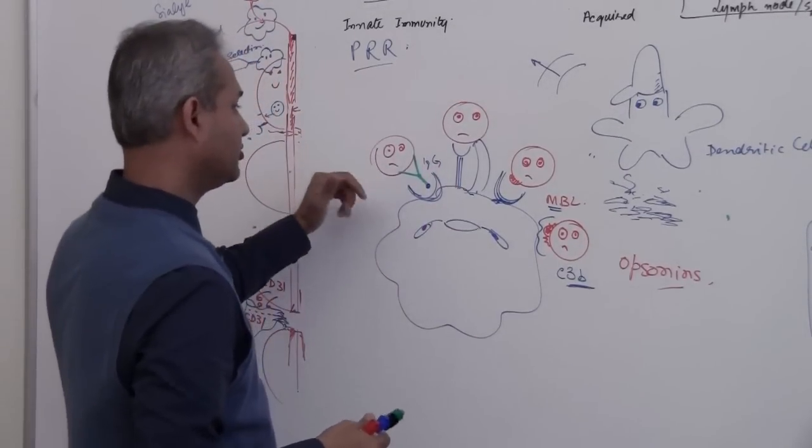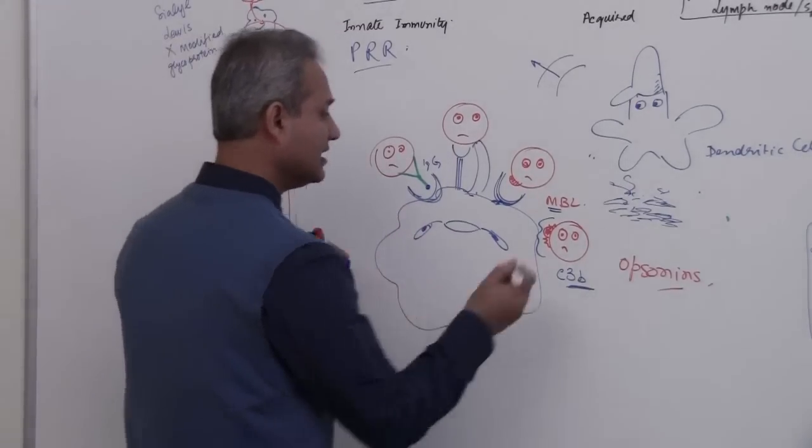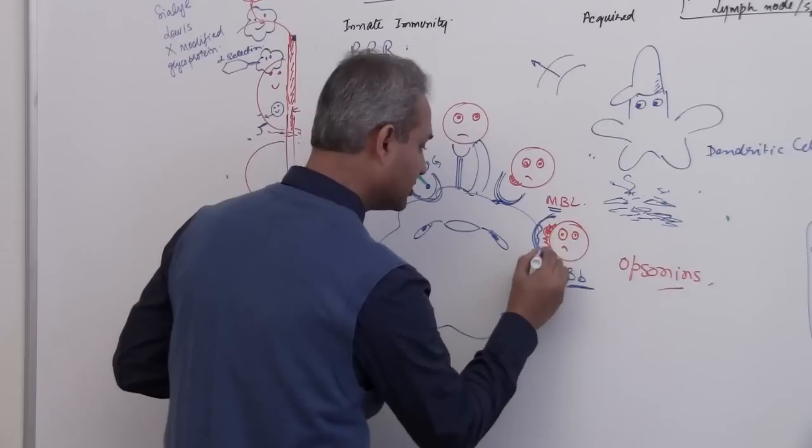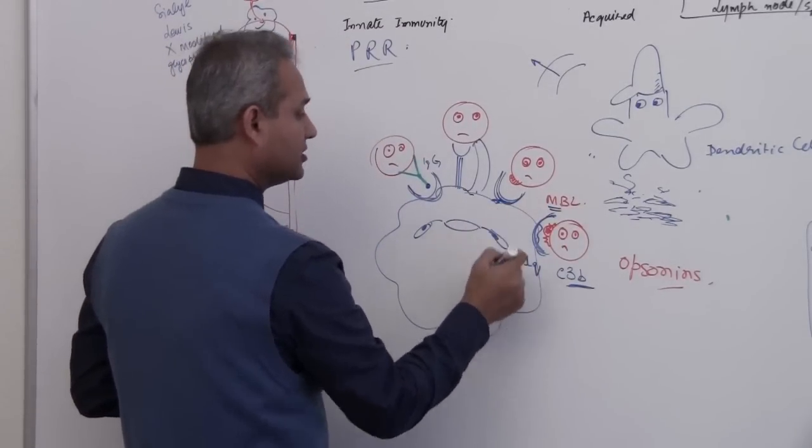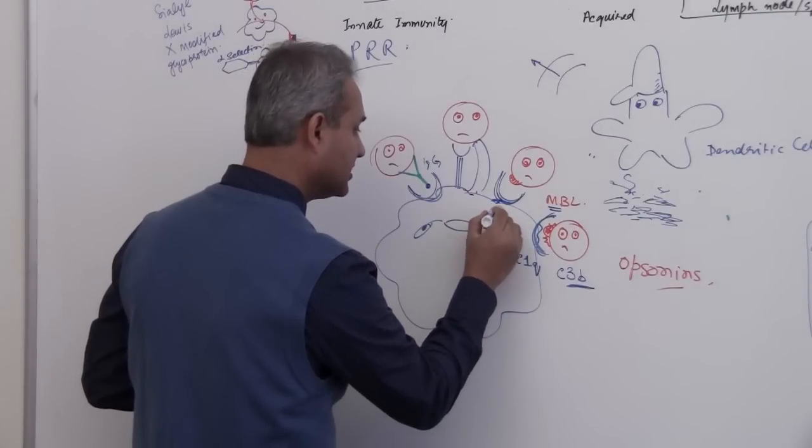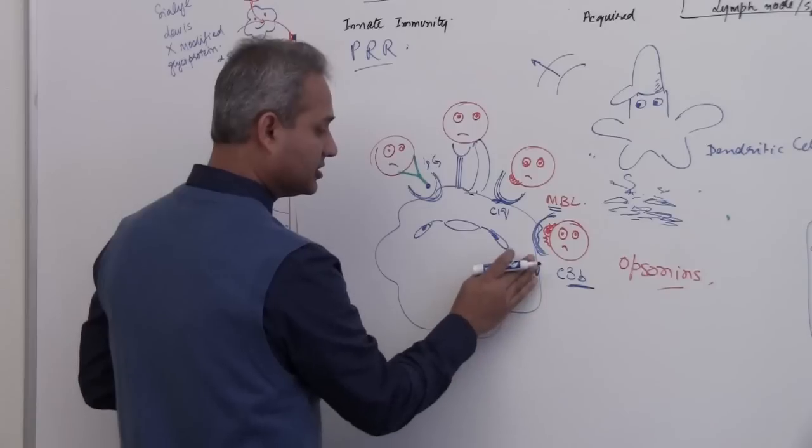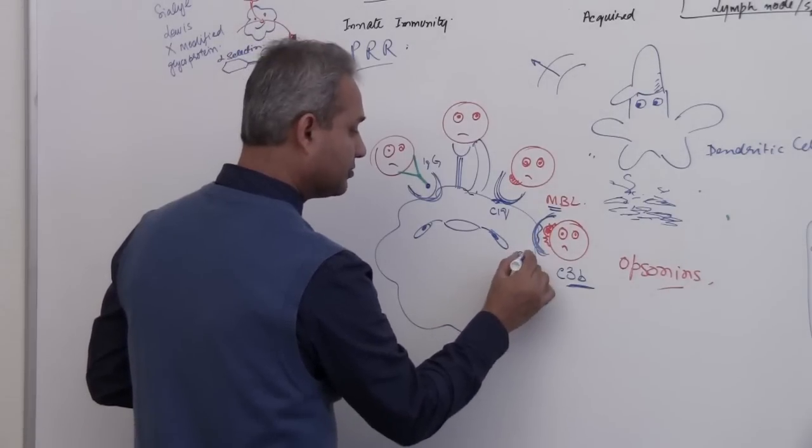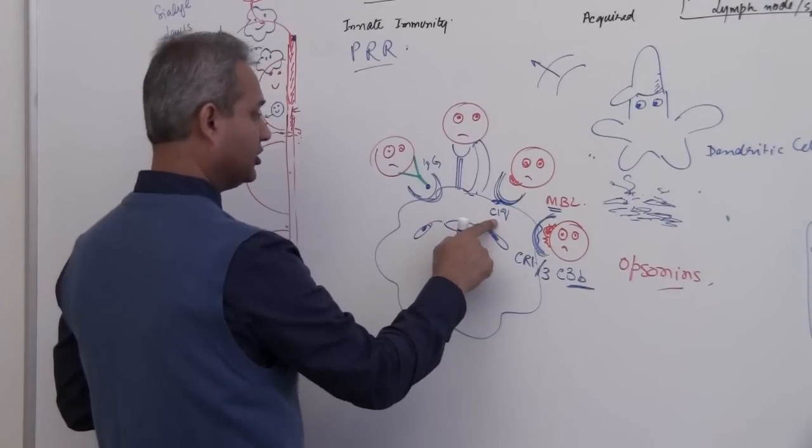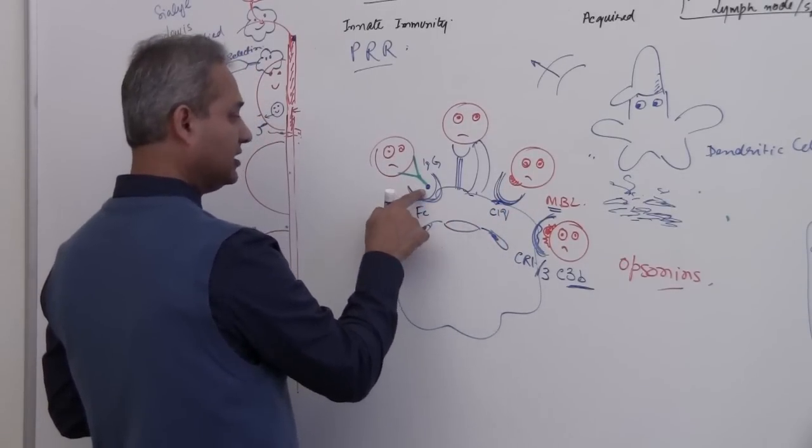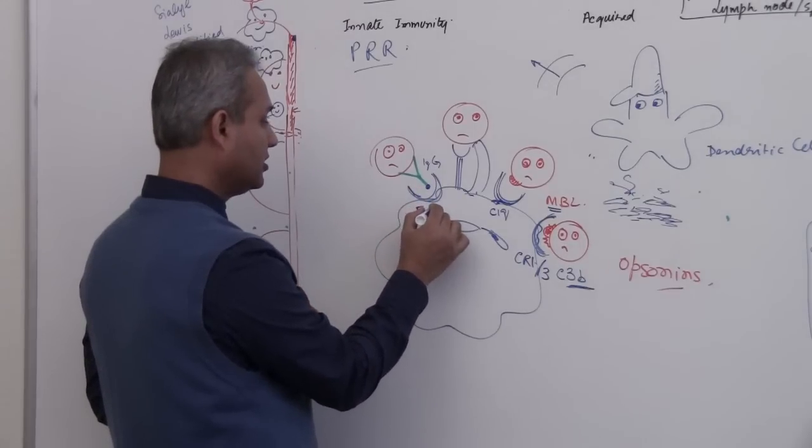So I just had written those receptors here. C3B this receptor is going to be called C1Q. MBL receptor is, sorry, so this is C1Q which binds MBL. The complement binding receptors are complement receptor 1 and 3, C3B. Once again, MBL receptor is C1Q and IgG receptor is Fc, so that is for the Fc portion of the IgG, Fc gamma IR.